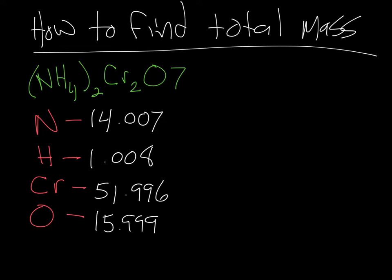Now we have to multiply each one of these by how many there are. If you look at your formulas, you see that nitrogen is inside the parentheses and there's two of everything in the parentheses. So this is two times one, meaning I have two nitrogens. So I'm going to take my 14.007 and multiply that by two, which gives me 28.014. That's my total mass of nitrogen.